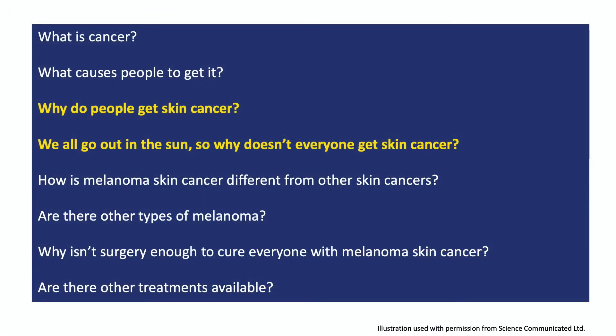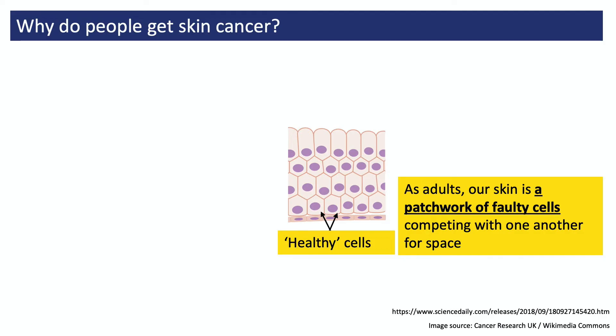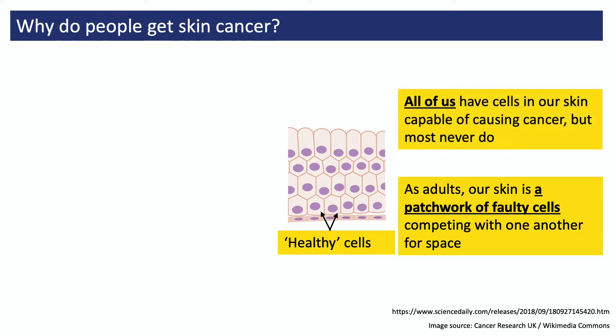Now let's look at skin cancer and why people get it, but also why we don't all get it despite going out in the sun. The first thing I want to do is dispel the idea that healthy looking skin doesn't contain DNA damage. Because in fact, as an adult, and especially as we enter older age, our skin is actually a patchwork of faulty cells all competing with one another for space. These cells contain many of the same faults that we find in cancer cells, just not quite in the same combination. In fact, all of us have cells in our skin that are capable of giving us skin cancer, but most never do.